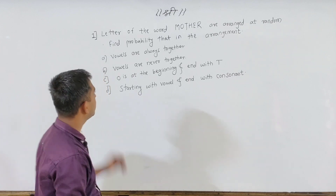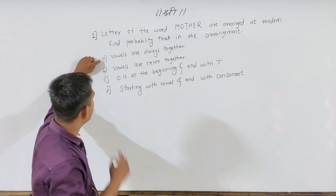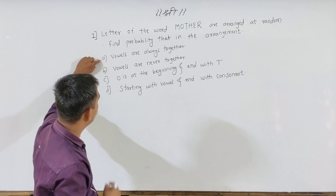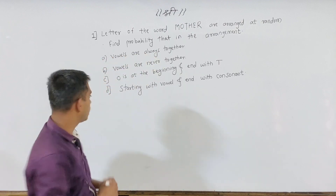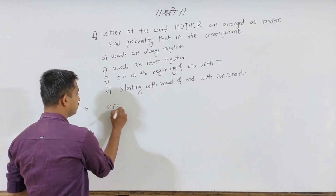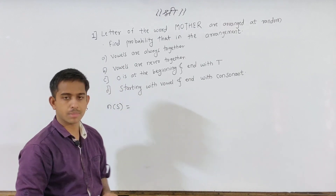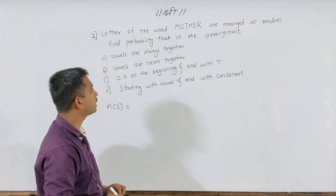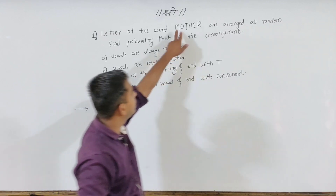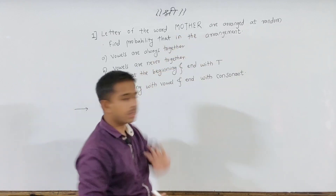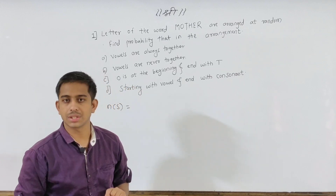What do we do? How do we understand the conditions? How do we understand that the vowels are always together? Now we will find n(S), the sample space. How do you find the sample space? The letters are in the main word MOTHER — the letters are counted using factorials.